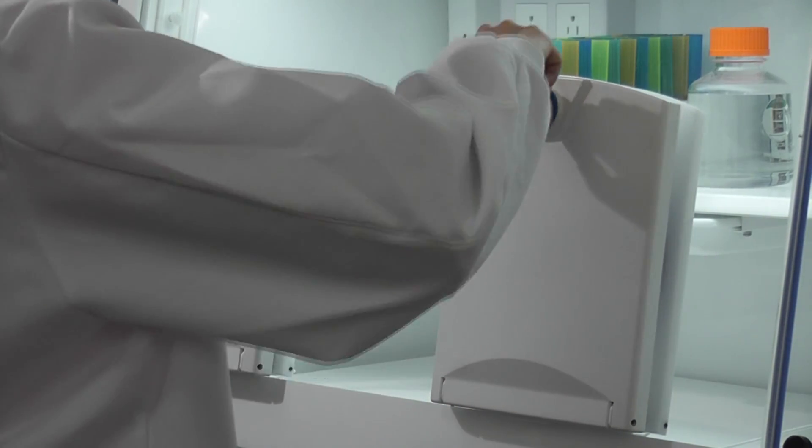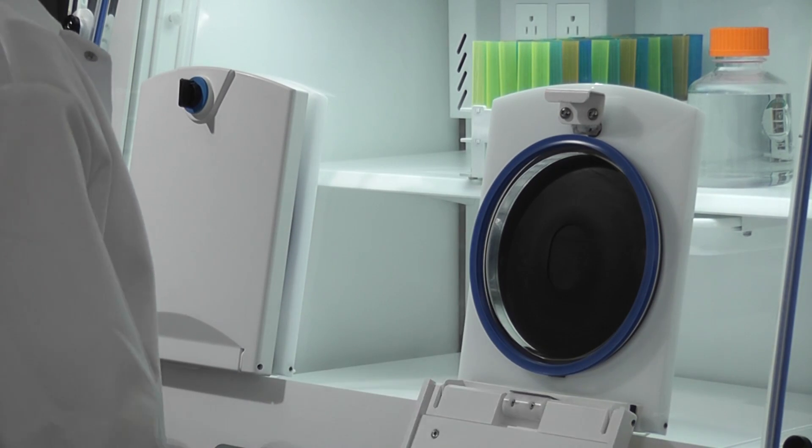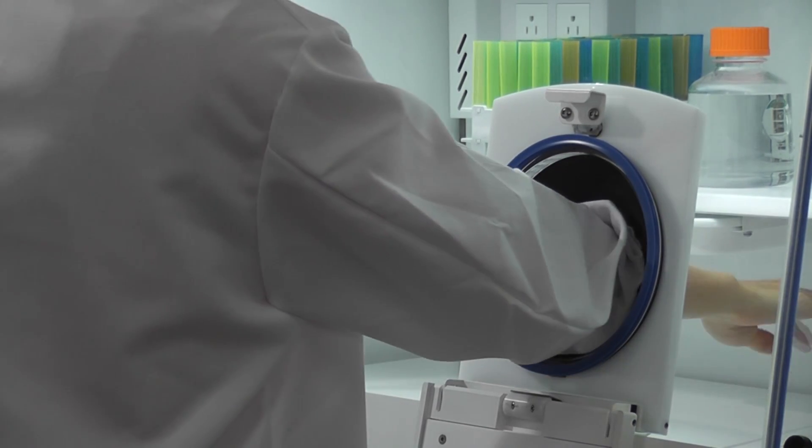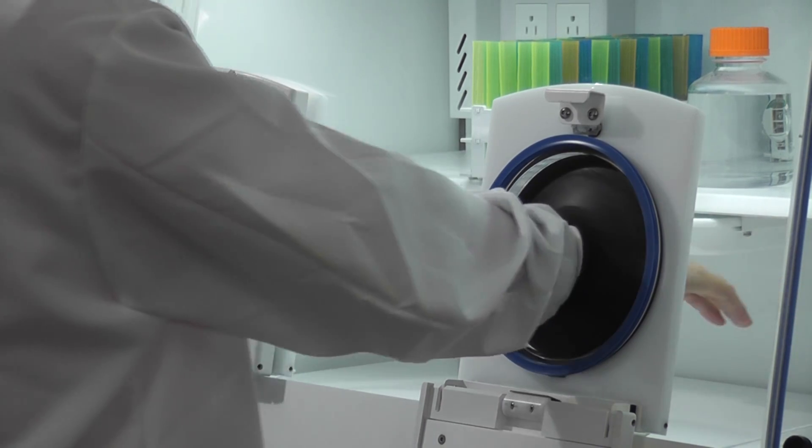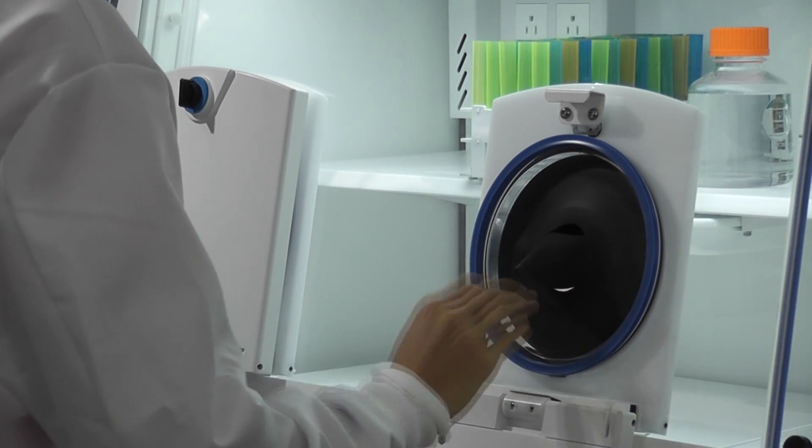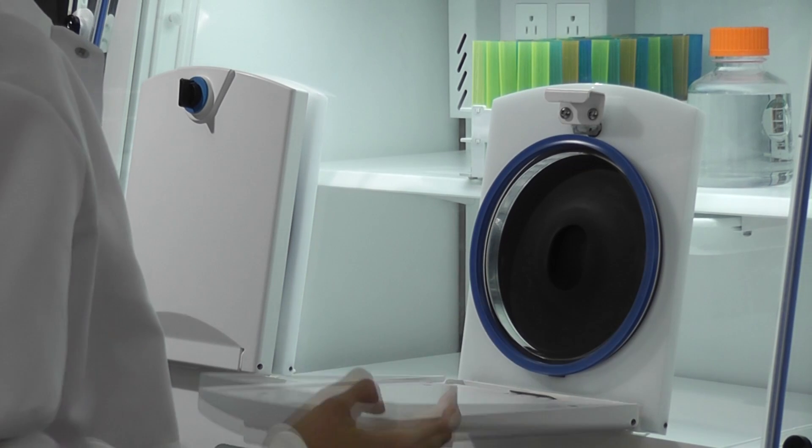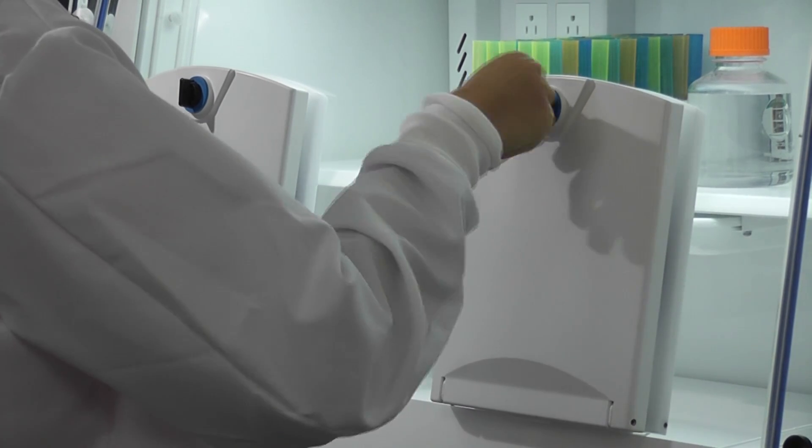To gain access to the workstation, open the outer door. Insert your hand and begin working. When finished, withdraw your arm slowly. Tuck in the flap and close the door. It's that easy.